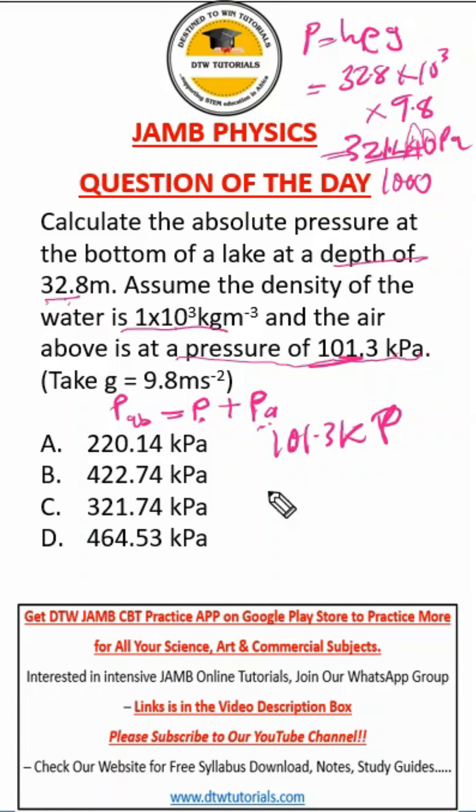So this P is finally 321.44 plus 101.3. When we add this up, we're going to have 422.74, so we're going to have our answer as D.